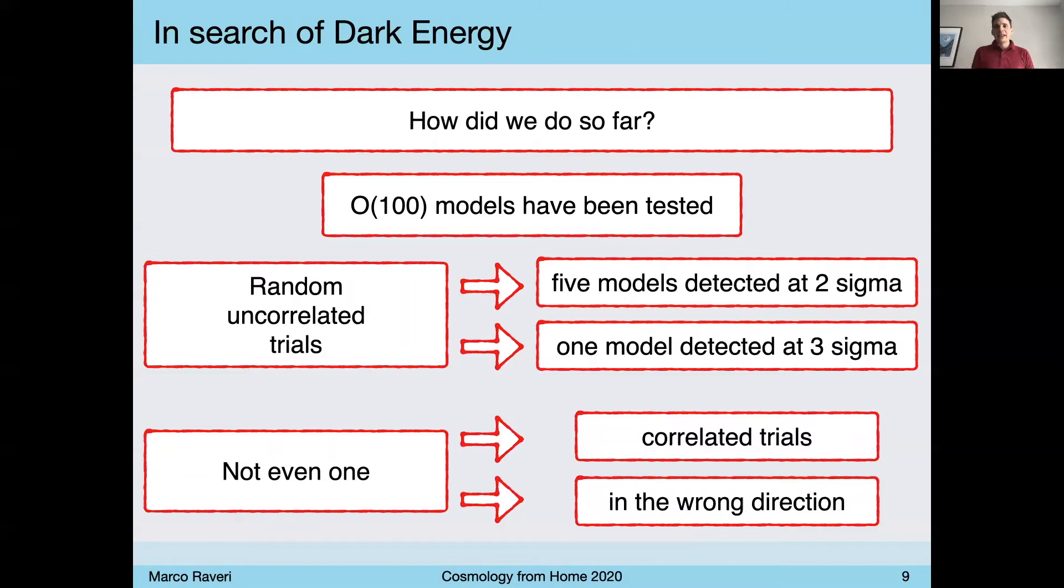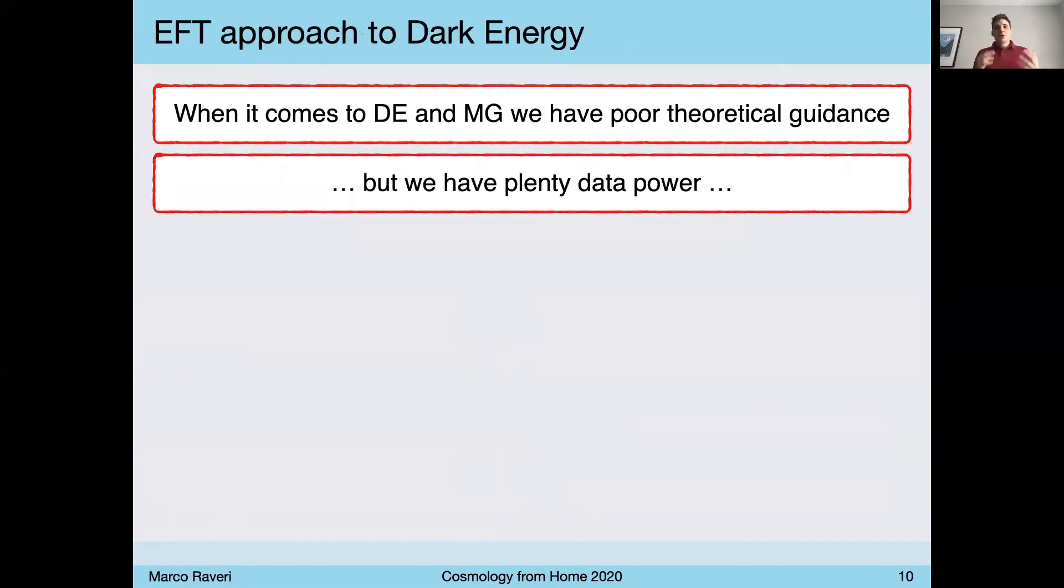And they are not really random. They are probably just looking in the wrong direction. And I take this as an indication of the fact that when it comes to dark energy and modified gravity on cosmological scales, we really have poor theoretical guidance. We don't really know where to look. But we are going to have and we already have plenty of data power that we need to use and we need to make the best possible use of.